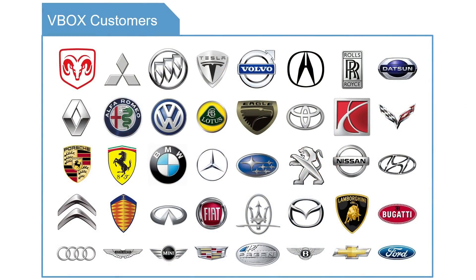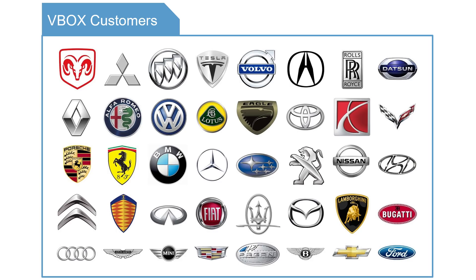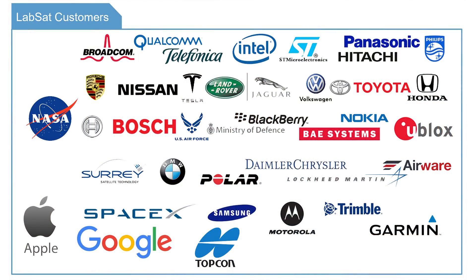A little bit about RaceLogic: I founded the company 28 years ago. It's an electronics company of about 100 people and we supply the automotive and technology worlds with high accuracy position and simulation equipment. Our velocity box, V-Box, is used by the majority of car companies and tyre companies in the world when they're measuring acceleration, top speed and braking performance. We also supply a GPS simulator called the LabSat to a lot of large technology companies who use it to calibrate and test their GPS systems.